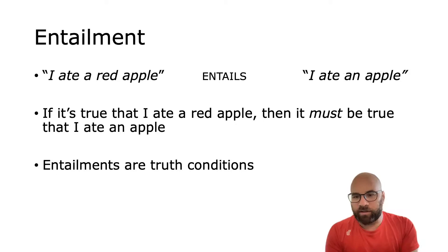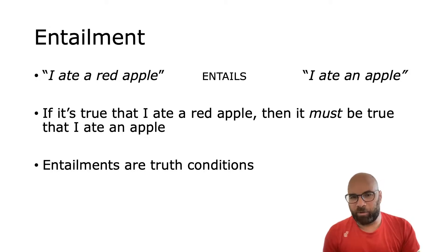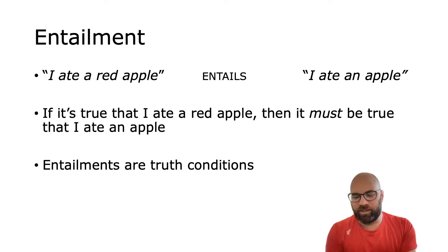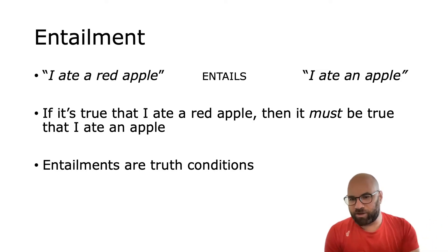There is a closely related concept called entailment, and this is a concept you'll hear a lot in semantics and pragmatics. So, for example, if I say I ate a red apple, that sentence entails I ate an apple. What that means is if it's true that I ate a red apple, then it must be true that I ate an apple. There's no way that I could eat a red apple without eating an apple. That's what entailment is — if one sentence or one expression is true, then there's some other expression that must be true for the first one to be true.